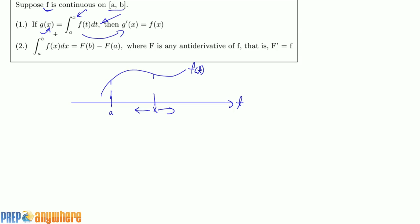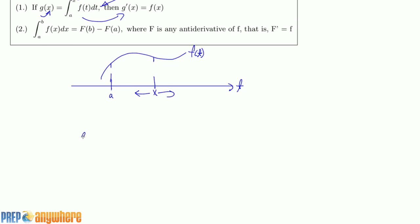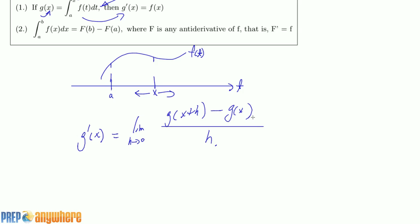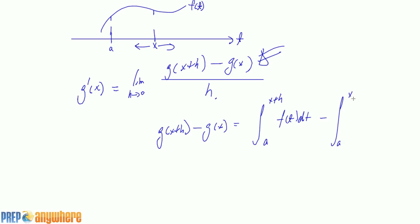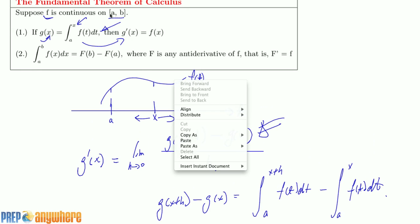We're trying to show that if g(x) is defined as that integral, then its derivative is f(x). So g'(x), by definition, is the limit of [g(x+h) - g(x)] / h as h→0. Let's figure out what that is. g(x+h) - g(x) is: the integral from a to x+h of f(t) dt, minus the integral from a to x of f(t) dt. All I did was use the definition of g.